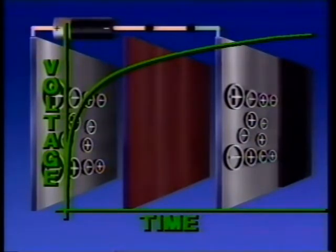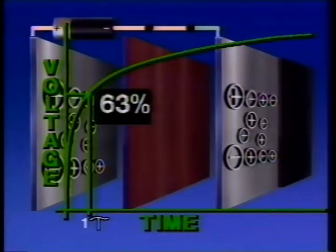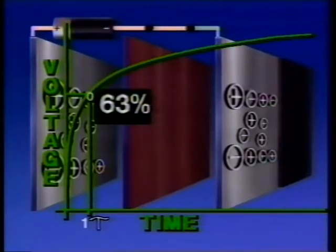If we plot that increase of voltage over time, we see an exponential curve rising from zero and approaching ninety-nine percent capacity. Five time constants is how long it takes the capacitor to become charged.